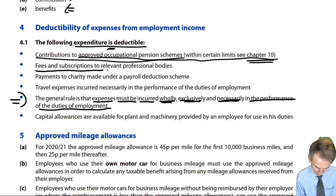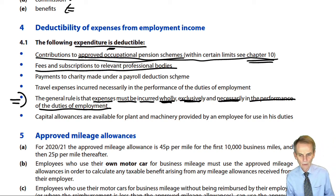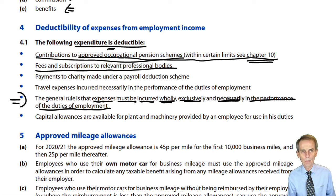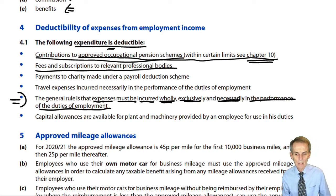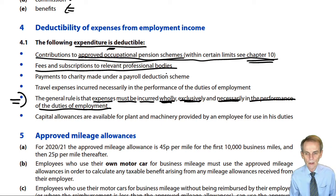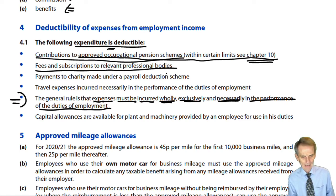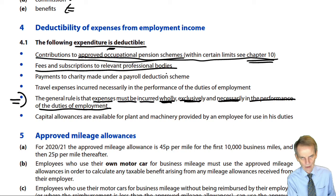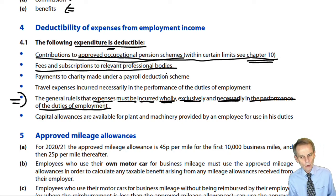Also deductible are fees and subscriptions to relevant professional bodies. Once you've passed your exams and joined the Association of Chartered Certified Accountants, your professional subscription each year will be an allowable deduction — but it must be relevant to the job that you are doing. Additionally, if an individual wishes to gain effective tax relief for a donation to a charity, the gift aid scheme is available as we reviewed in Chapter 2.